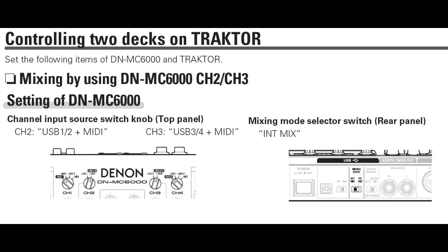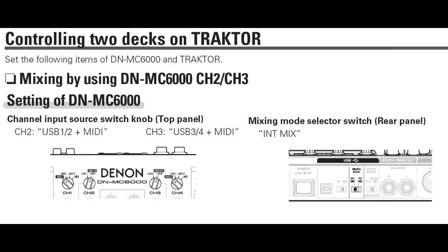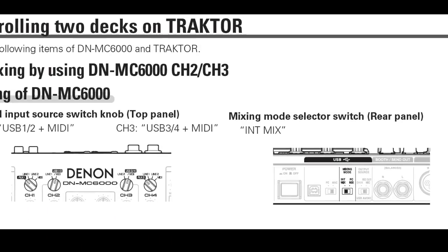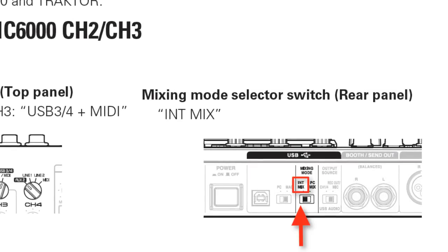Then on the DNMC 6000, set Channel 1 to AUX 1, Channel 2 to USB 1-2 MIDI, Channel 3 to USB 3-4 MIDI, and Channel 4 to AUX 2. Finally, set the mixing mode switch on the back of the machine to INT Mix.